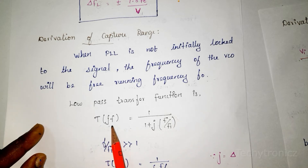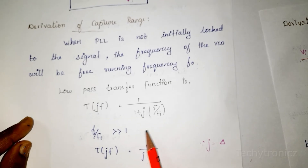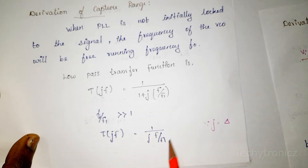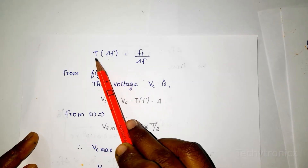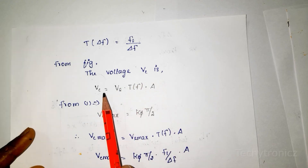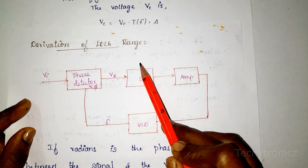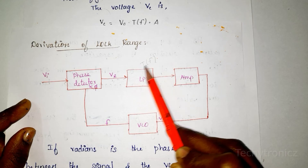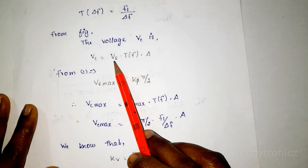Since F/F1 is much greater than 1, we neglect 1 and substitute j = δ, giving T(δF) = F1 / δF. From the block diagram, VC = VE × T(F) × A. Substituting VE_max = Kφ × π/2 (when φ = 0, PLL locked), and using KV = ΔF0 / VC, we get: (F − F0)_max = KV × VC_max. This whole squared value is the lock range ΔFL = KV × Kφ × π/2 × A.